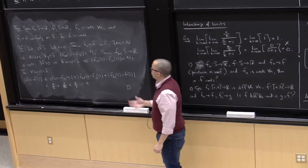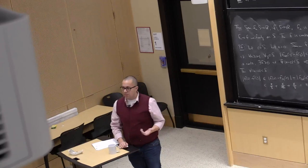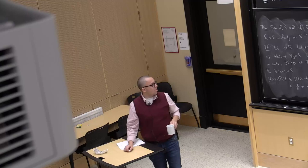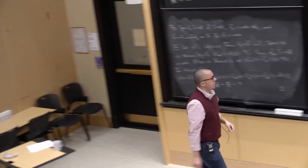The uniform limit of continuous functions is continuous. This finishes the proof. What this says in one sentence is: the uniform limit of continuous functions is continuous.